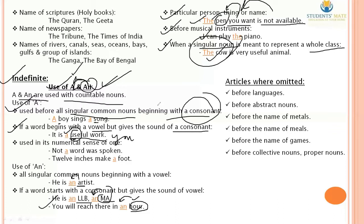To summarize — the easiest way to find the difference between 'a' and 'an': look at the sound of the word that follows. If it produces a vowel sound, use 'an'; if it produces a consonant sound, use 'a'.